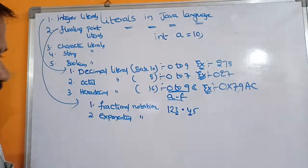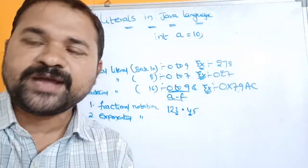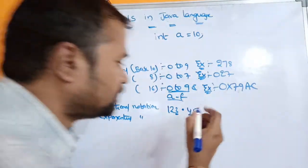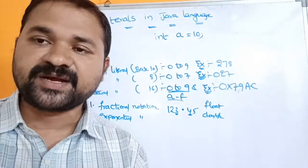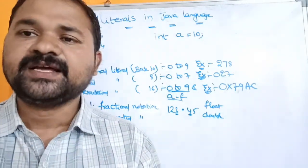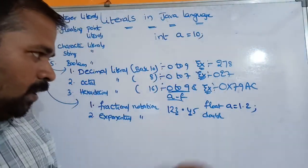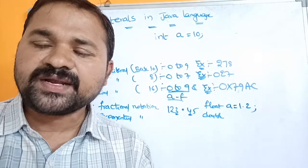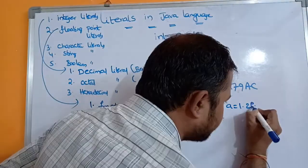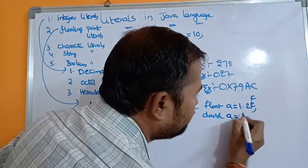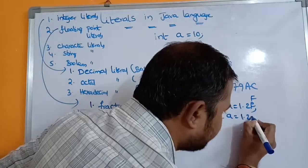By default, double will be considered as a floating point number. We have two data types: float and double. If you want to assign a floating point number explicitly as float, you must suffix it with a small f or capital F — for example, 'float a = 1.0f'. For double, you can initialize directly, or optionally suffix with small d or capital D.